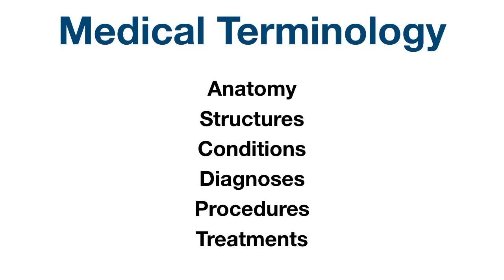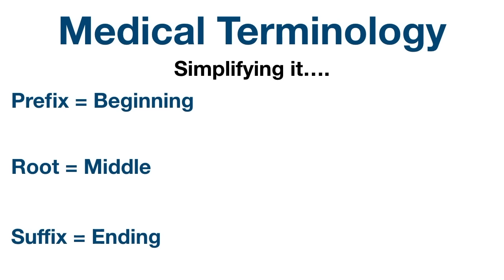So what is medical terminology? It's the language used to describe things like anatomy, structures, conditions, diagnoses, procedures, treatments, and much more. Learning these medical words can be tough at first — it can almost feel like a different language. But if you break the word down it can really help you better understand the medical term. Most medical terms have a beginning, middle, and end, and when combined they help describe the word.